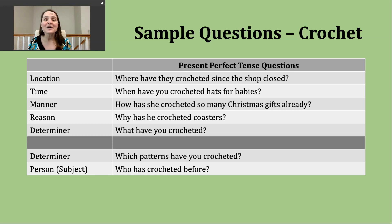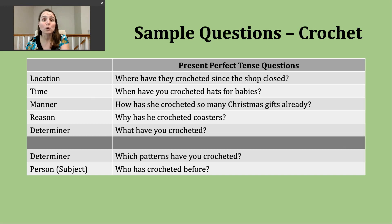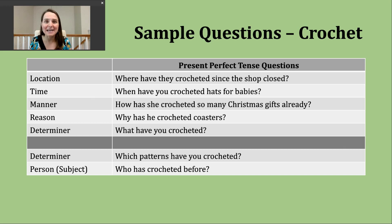Another type of question is to know the reason someone has done a particular action. We use the question word why for that. "Why has he crocheted coasters?" — a coaster is something you might put a drink on so that it doesn't leave a spot on a wooden table. The next type of question we ask is about an object, using the question word what — so we're asking about a thing. "What have you crocheted?" — again, we're asking you to name something. Maybe it's a coaster, maybe it's a scarf. You're going to name that object.